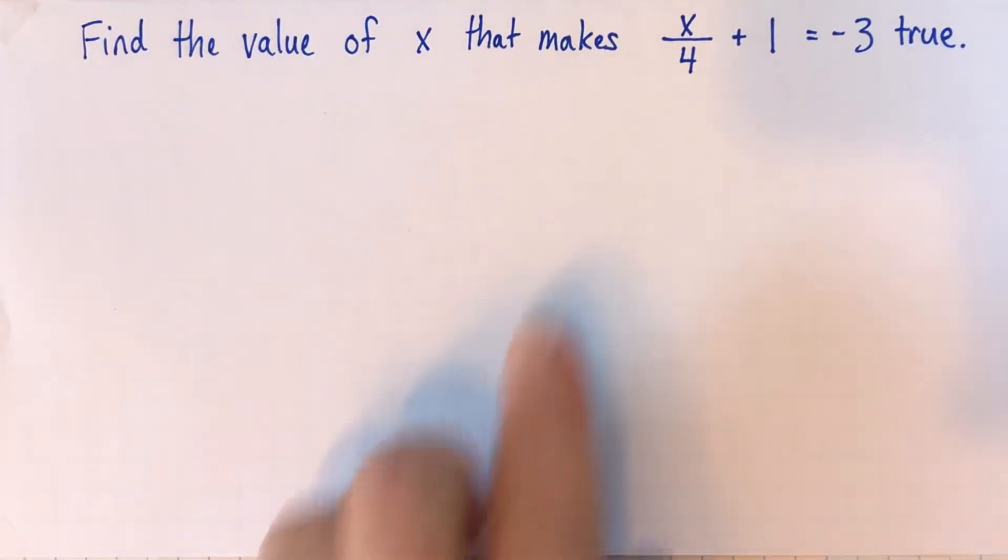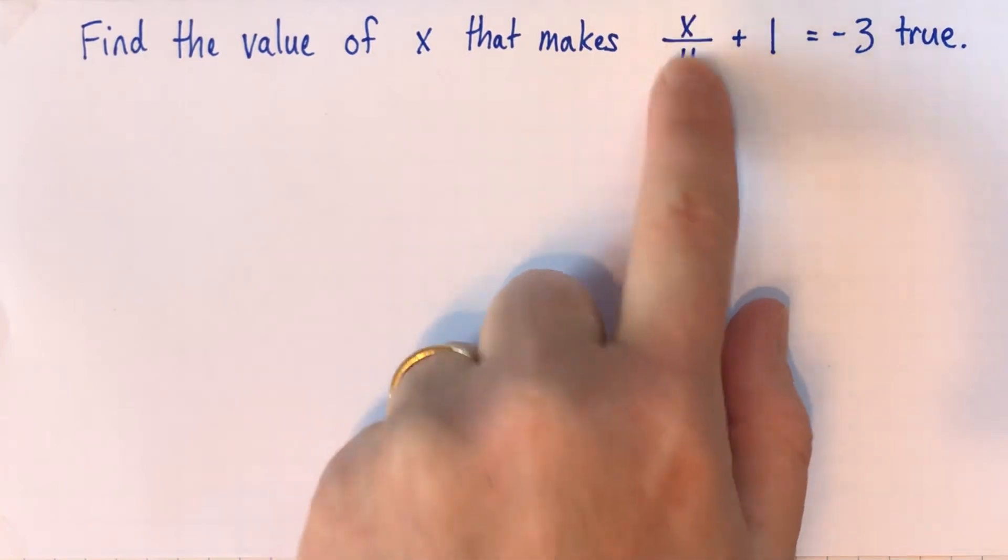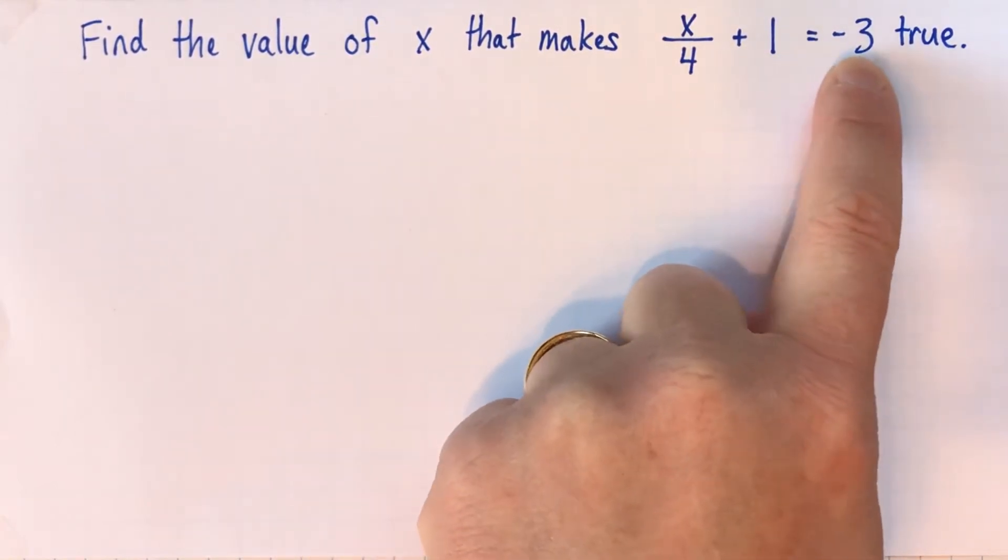Hi. In this video, we're going to solve this equation right here. x divided by 4 plus 1 equals negative 3, with an emphasis on how we can write a nice algebraic solution and how we can check that in a nice formal way.